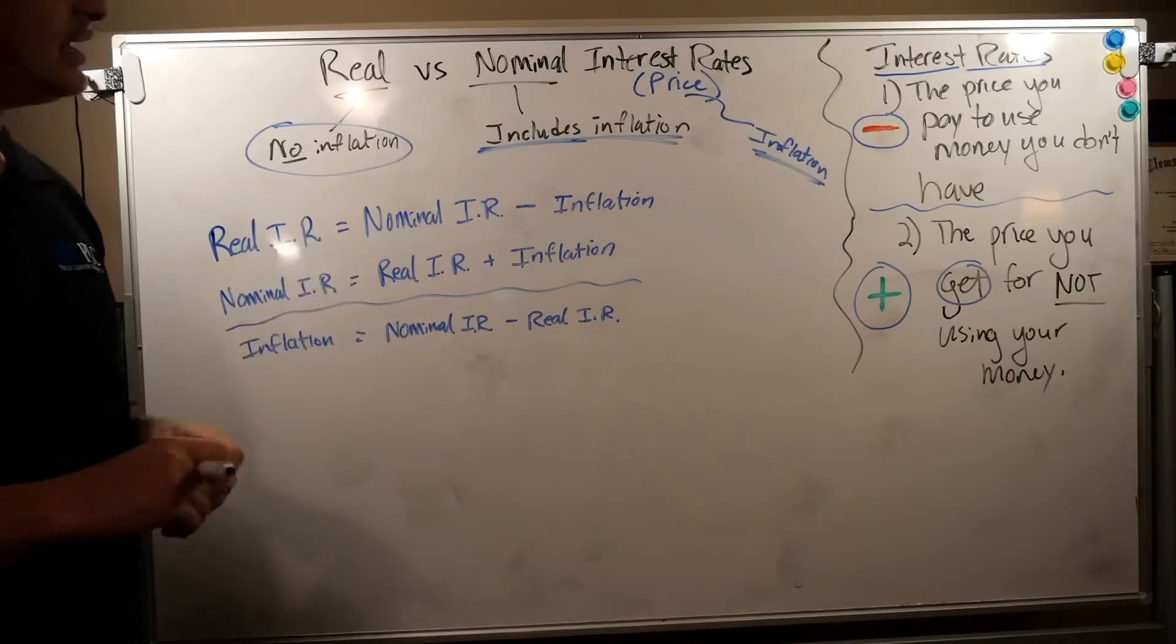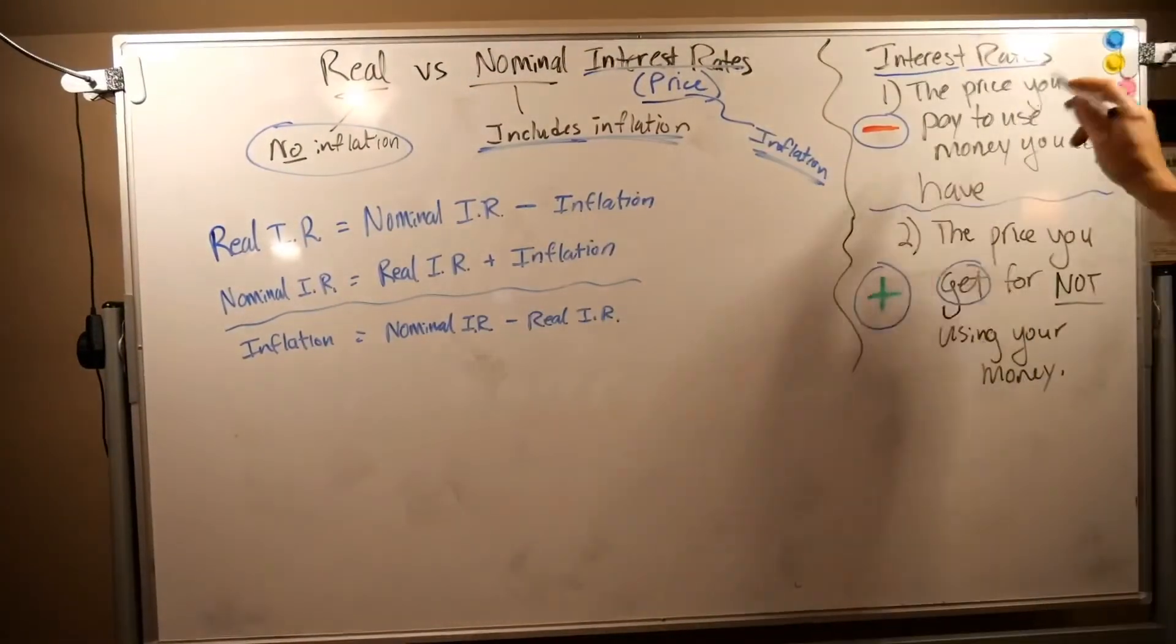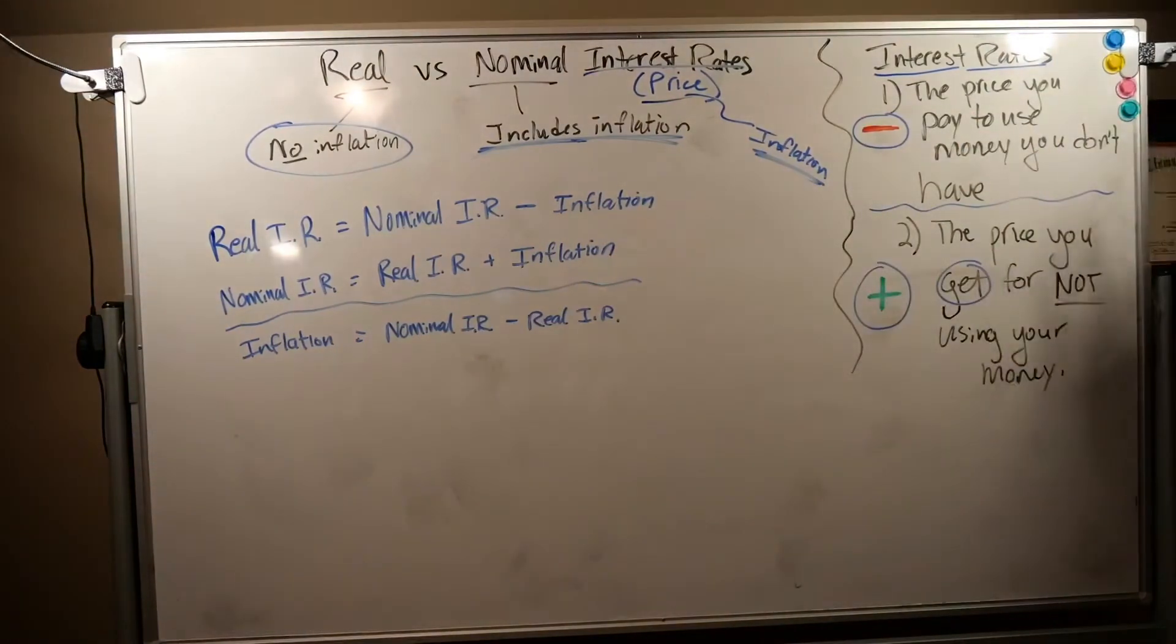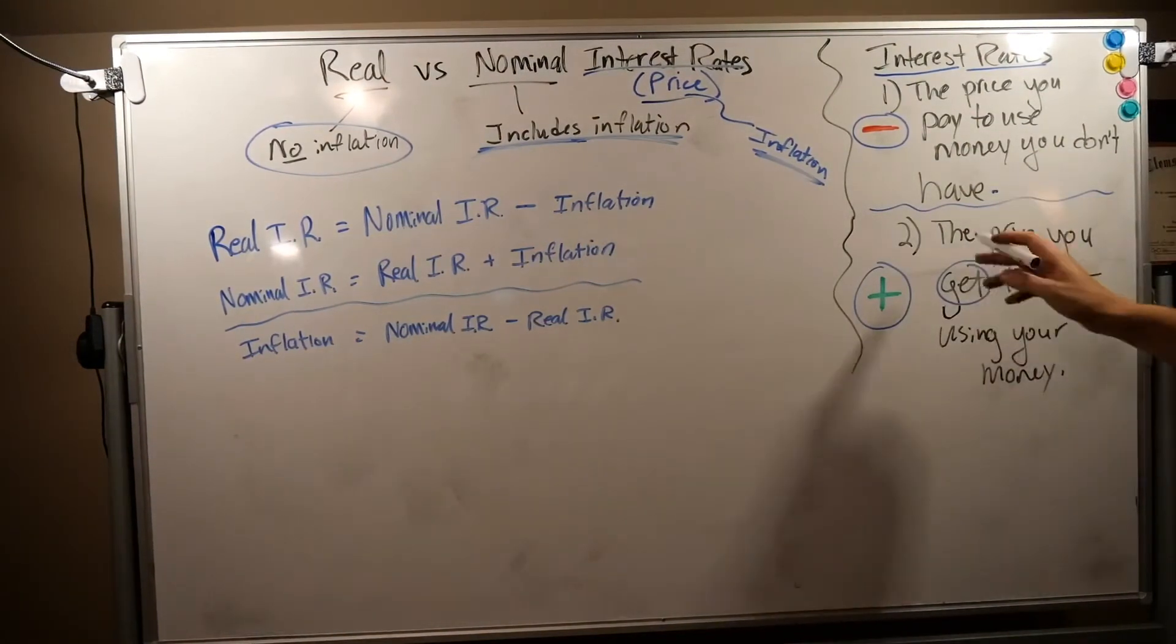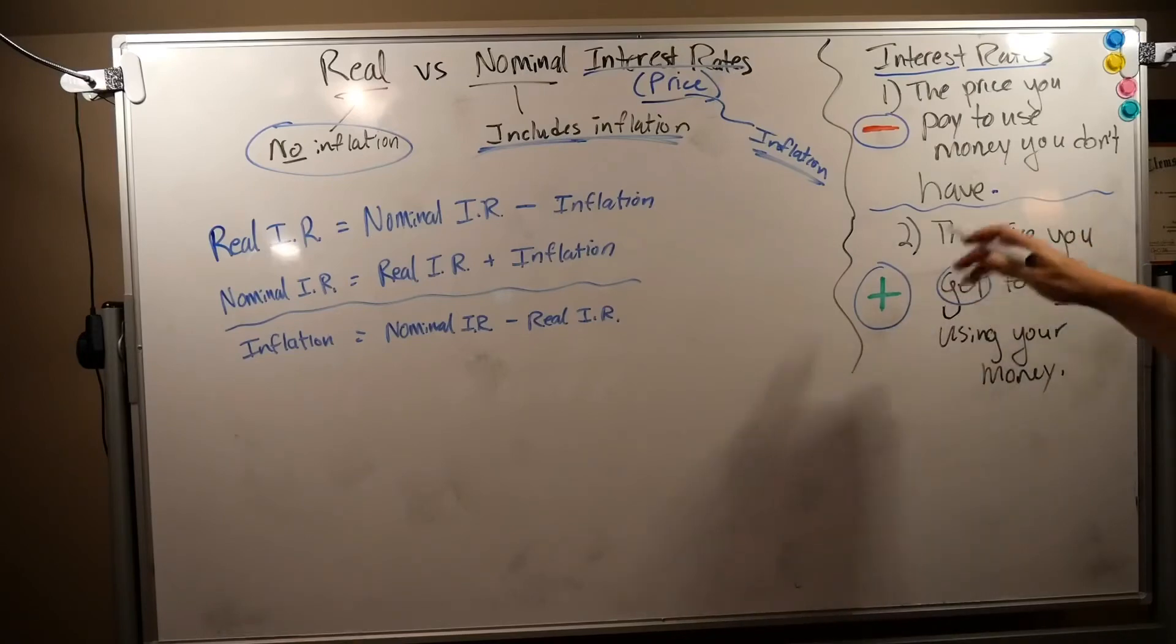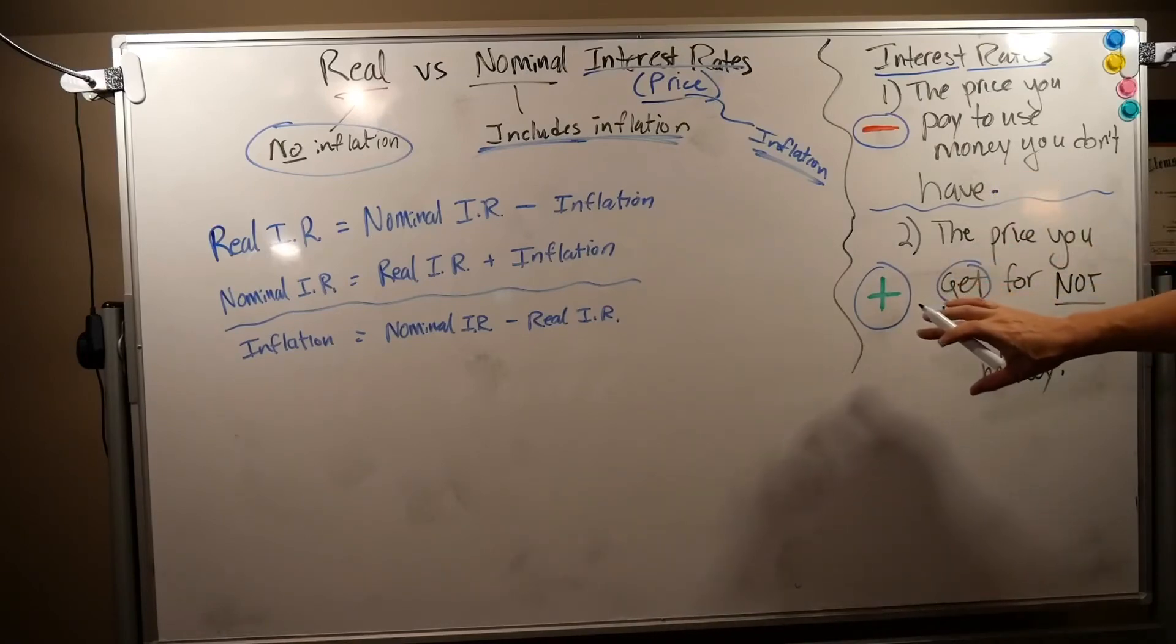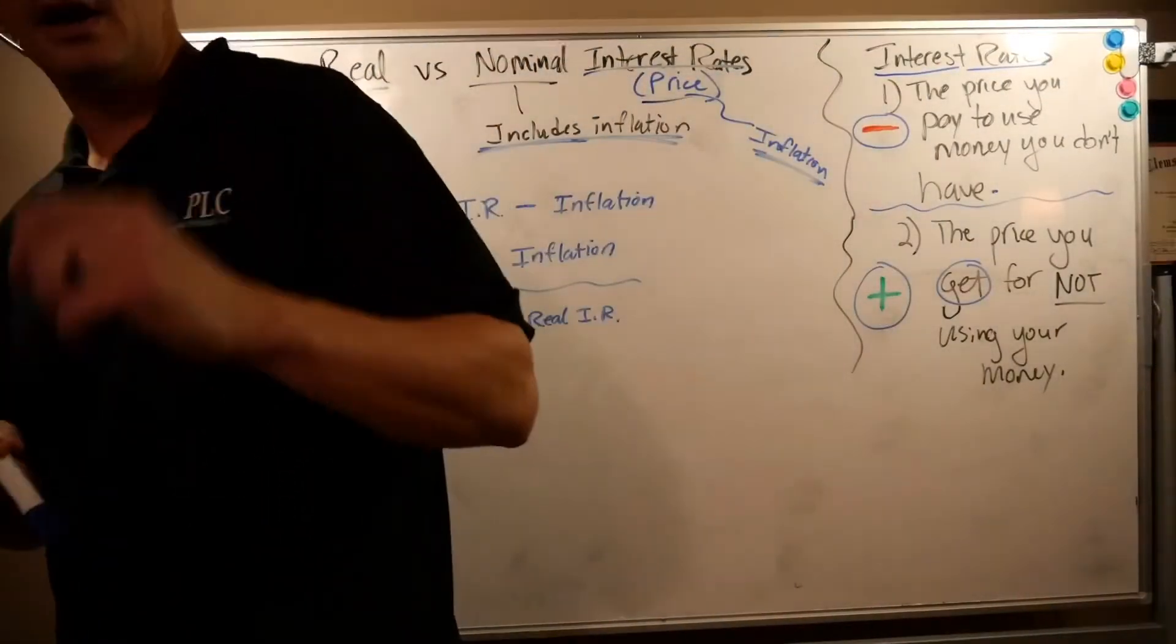Interest rates are a price—they're the price you pay to use money you don't have. Let's try to limit that moving forward. And it's the price you get for not using your own money. You want to make money, have some left over, put it in savings, let compounding interest do its thing, and quit buying crap you can't afford. That's the value of an education at a school like SMC.